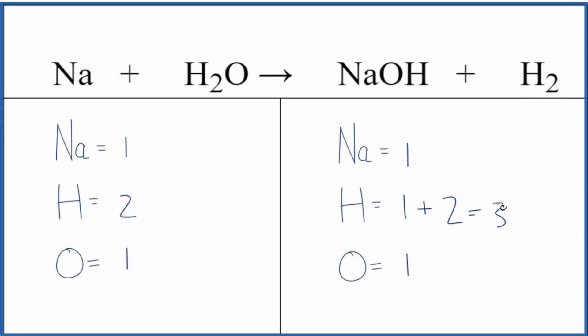Looks like we need to balance the hydrogens here. We have three in the products, two in the reactants. Probably the easiest way to do this is to put a two in front of the sodium hydroxide, so we can get an even number on this side here.